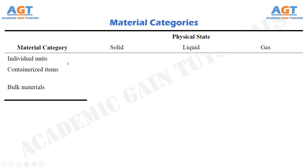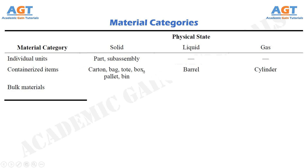The individual units of materials are carried as individual parts or sub-assemblies in the solid state. Materials in their liquid or gaseous states are not handled as individual units. Carton, bag, tote, box, pallet, bin, etc. can be used to carry containerized items in their solid states. Containerized items in their liquid states can be carried using barrels, and cylinders can be used to carry containerized items in their gaseous states.